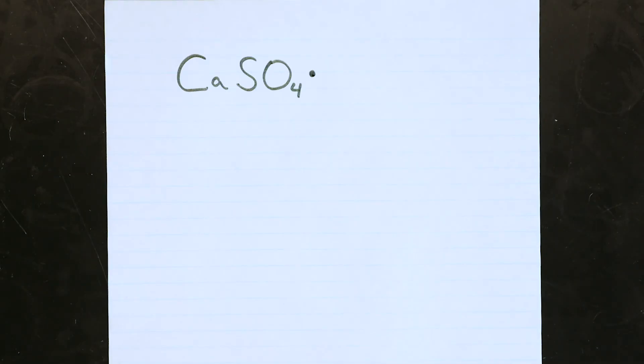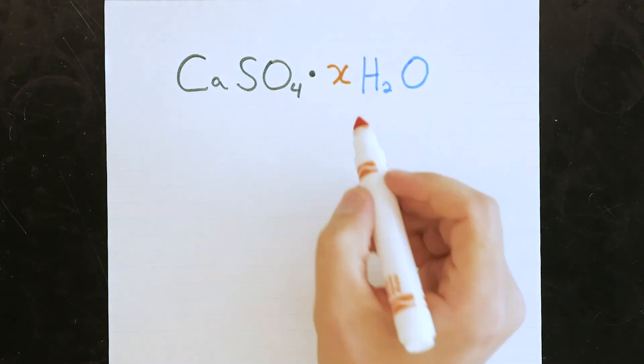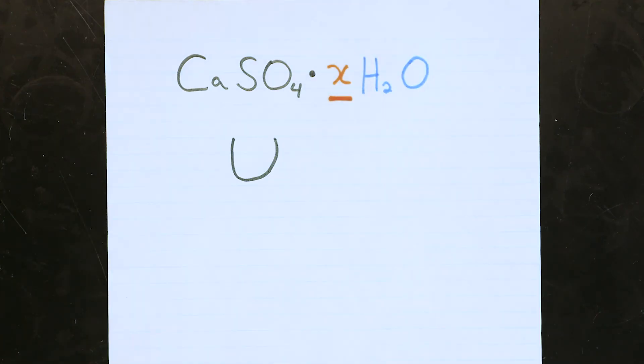Alright, to finish off this lab, remember that we need to figure out how many water molecules are attached to a calcium sulfate hydrate. We know the mass of our clean, dry crucible, and we know the mass of that crucible with our gypsum in it. So taking the difference between those two will give us just the mass of our gypsum.